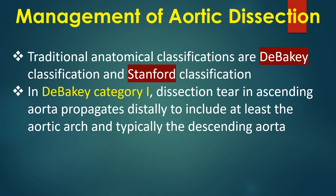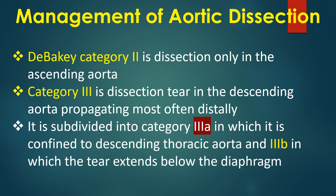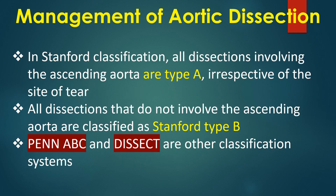In DeBakey category 1, the dissection tear in the ascending aorta propagates distally to include at least the aortic arch and typically the descending aorta. Category 2 is dissection only in the ascending aorta. Category 3 involves the descending aorta, subdivided into 3A (confined to descending thoracic aorta) and 3B (extending below the diaphragm). In Stanford classification, all dissections involving the ascending aorta are type A; all others are type B.